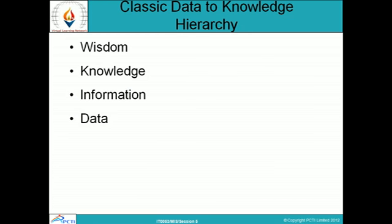The classic data-to-knowledge hierarchy includes wisdom, knowledge, information, and data. Wisdom is stored information which reflects in the working of a scenario. Knowledge is the applied information which, combined with experience, brings about knowledge. Information is processed data.